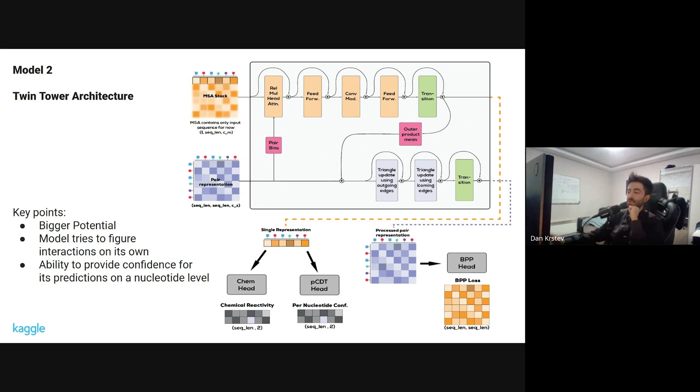The MSA representation is processed, in the original paper it was processed into axial attention, but since we don't have the column, I just decided to replace the axial attention with a relative multi-head attention and convolution. The pair representation, on the other hand, is processed through triangular multiplicative updates, and both of them go into a two-layer MLP before transitioning. After the data goes through eight of these blocks, we have processed single representation and highly processed pair representation.